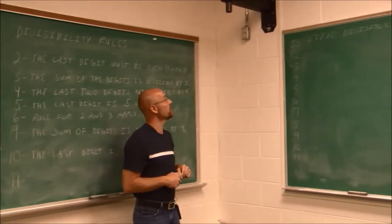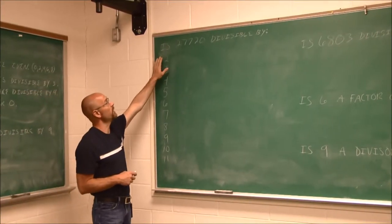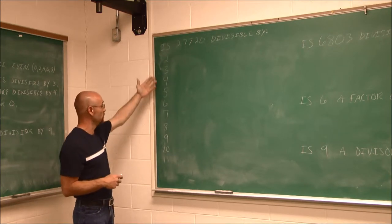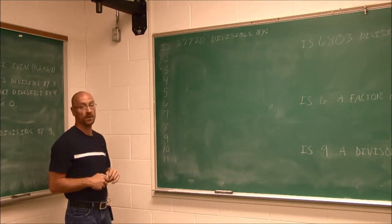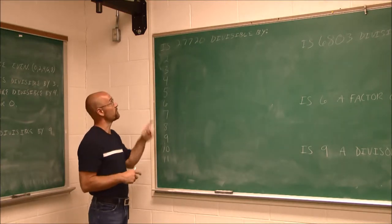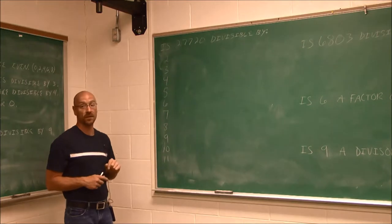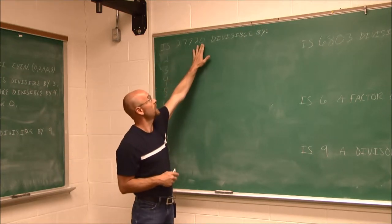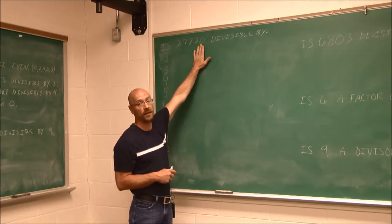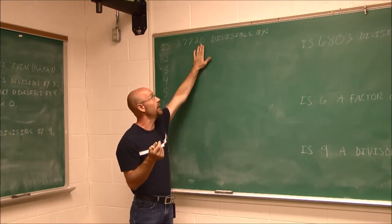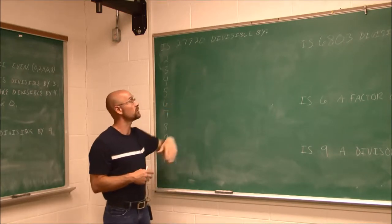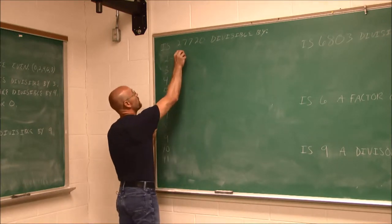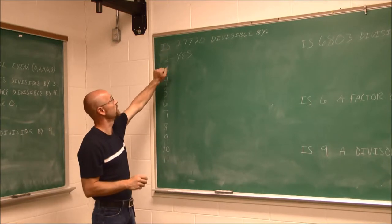The question is: is 27,720 divisible by the following numbers? I've listed 2 all the way through 11, and I'll give you a heads up — that number is divisible by every single one. First, divisibility by 2: we look at the last digit. Is it even? We know even digits are 0, 2, 4, 6, 8. The last digit is 0, which is even, so yes, this number is divisible by 2.